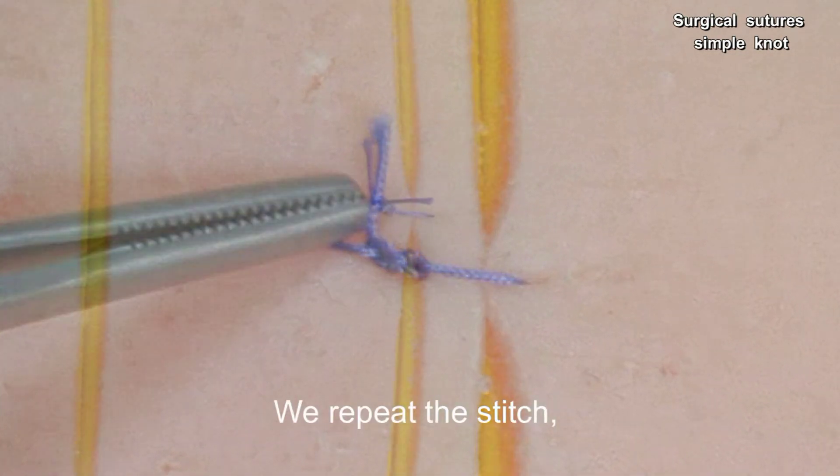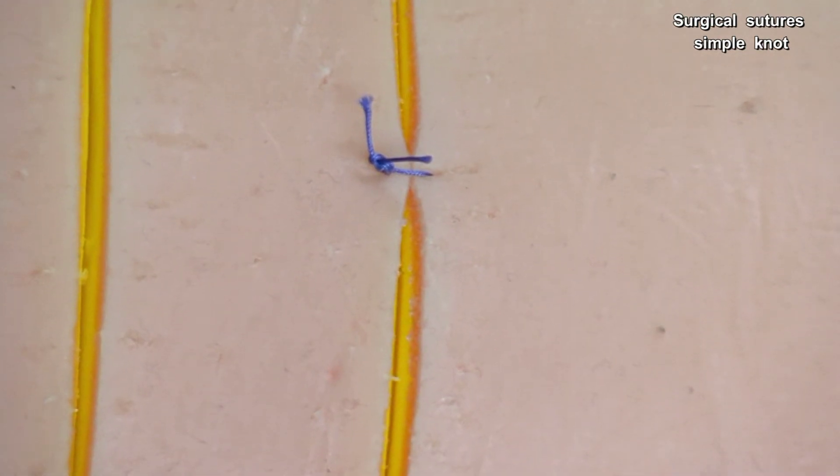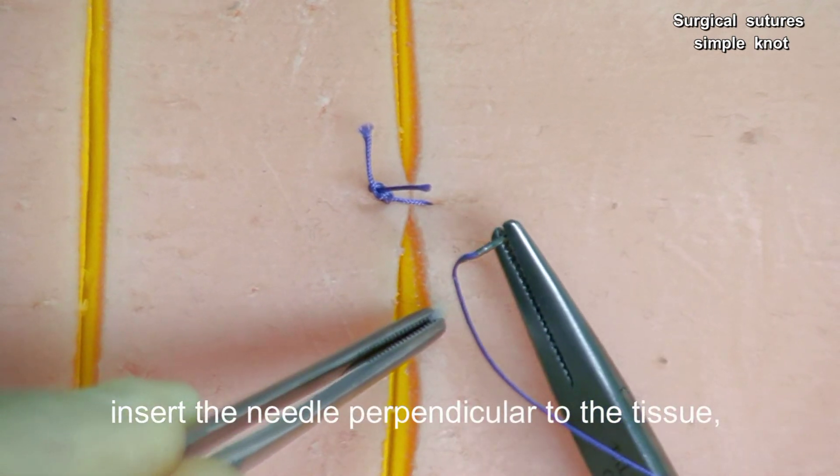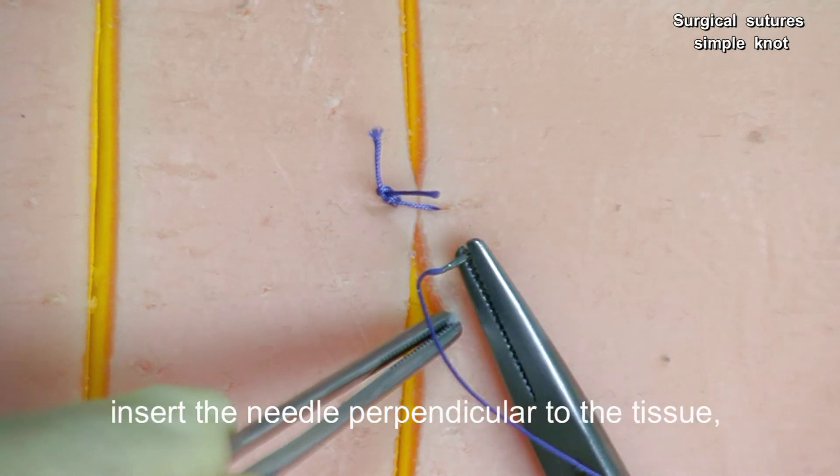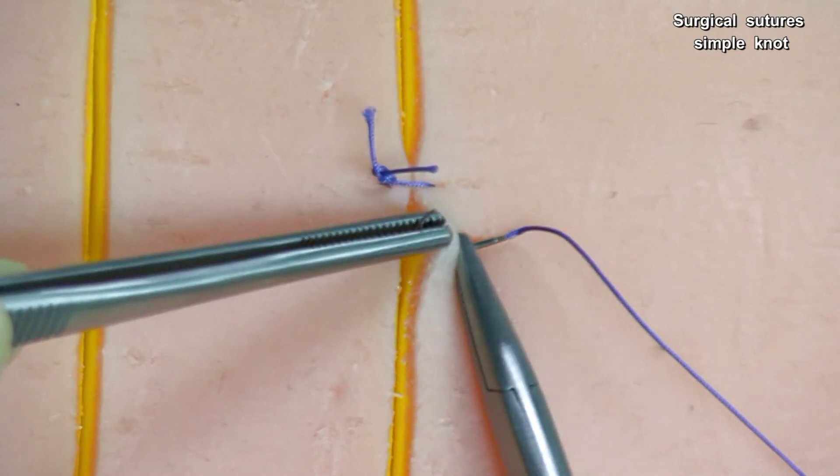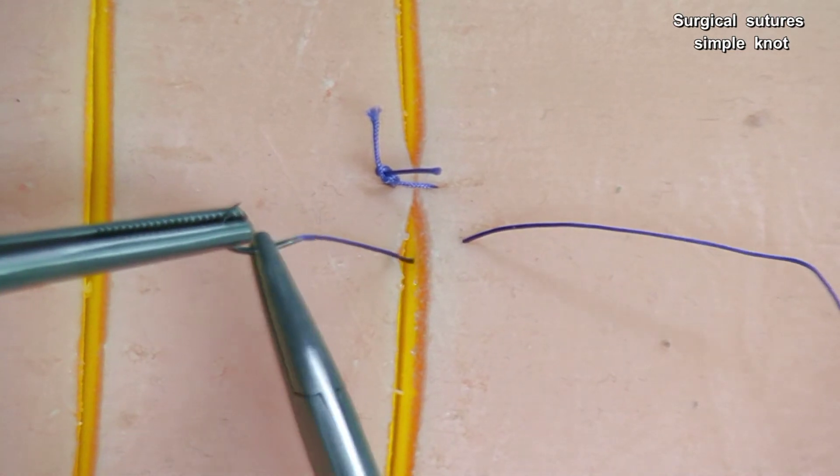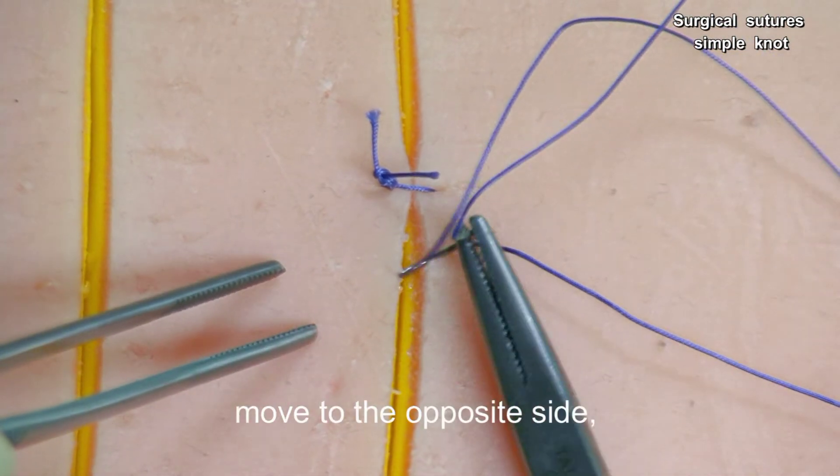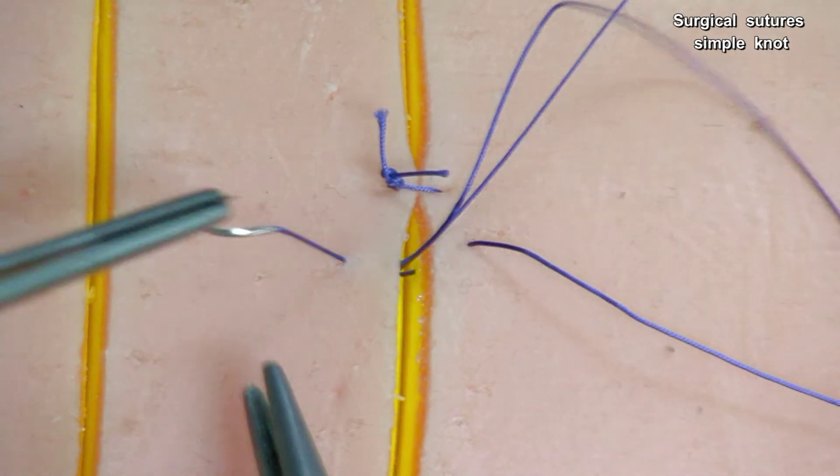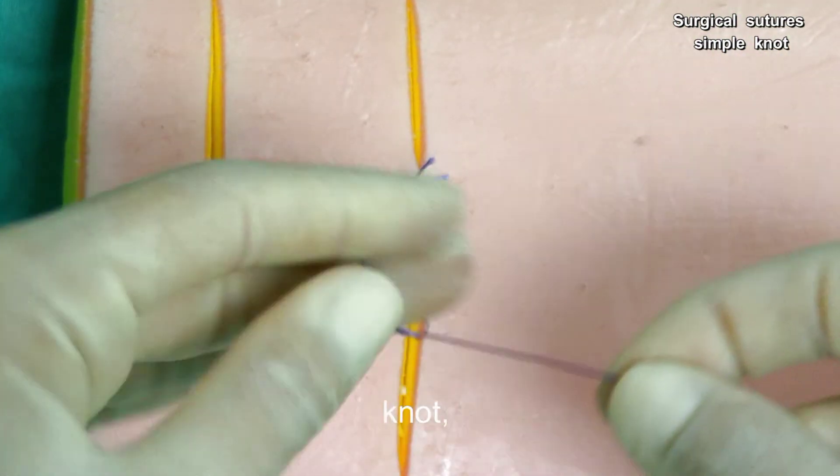We repeat this stitch. Insert the needle perpendicular to the tissue, move to the opposite side, bring closer, knot.